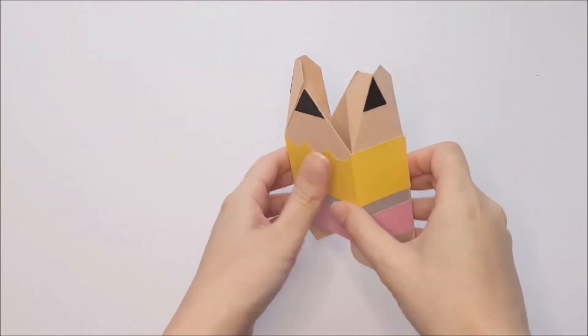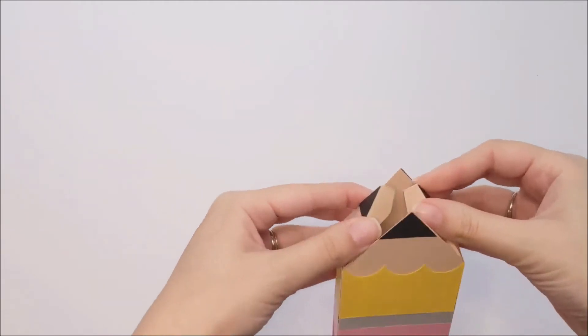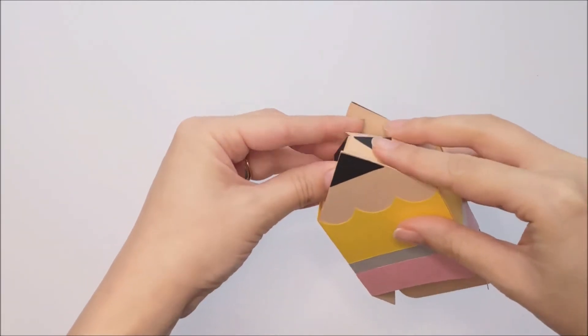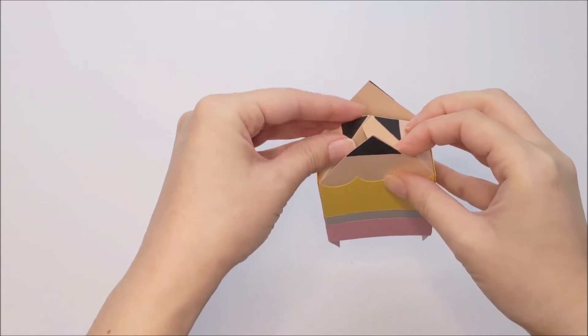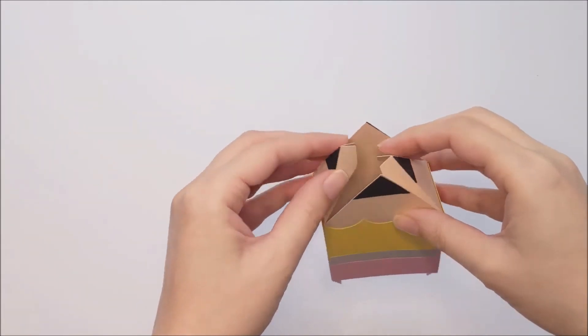Next, we'll be assembling the top. So we're going to fold in these sides here and make them meet at a point, like so. And if you'd like, you can put a little dot of glue at the top to keep them at the point, like that.